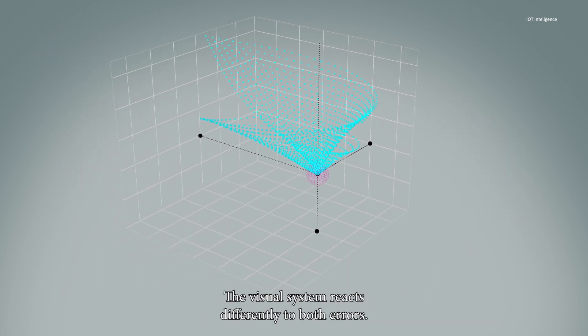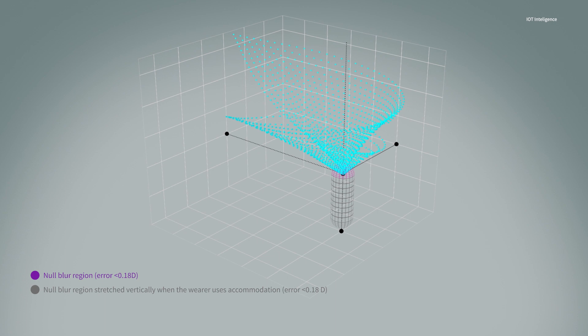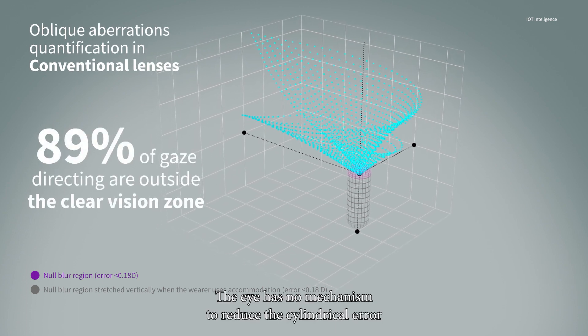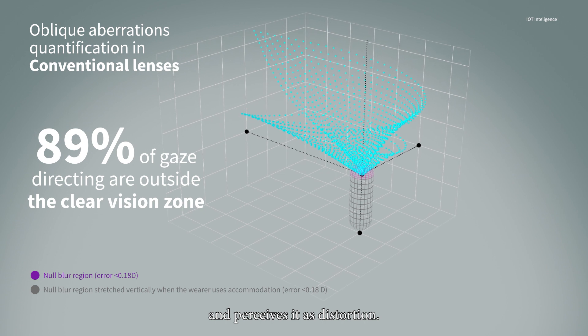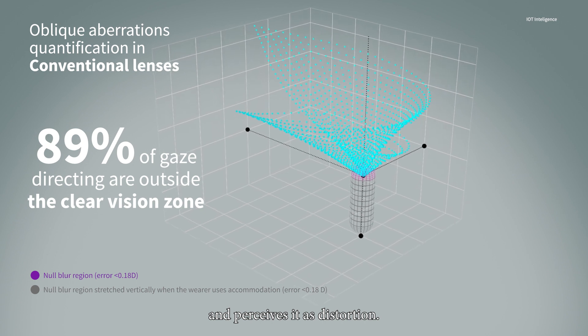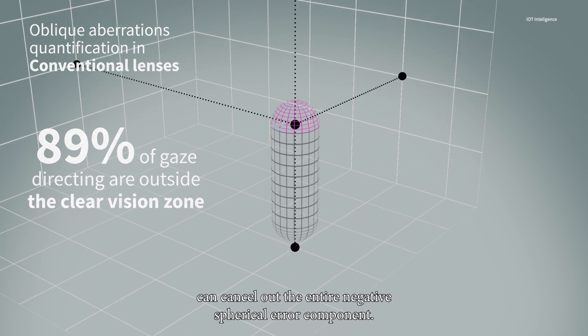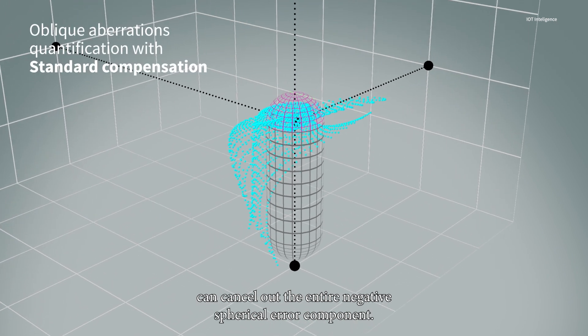The visual system reacts differently to both errors. The eye has no mechanism to reduce the cylindrical error and perceives it as distortion. The use of a small fraction of accommodation can cancel out the entire negative spherical error component.